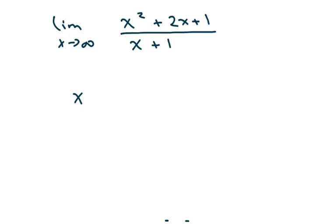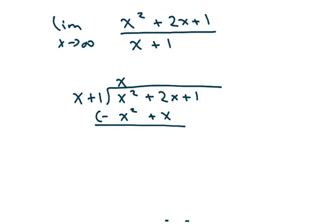You go x plus 1 goes into x squared plus 2x plus 1. You can do long division. So it's going to be x. When you multiply, you get x squared plus x. And we're going to subtract both pieces. And a lot of people like to put the x here, so let me do that. So that's going to be x squared, if you subtract, plus x.